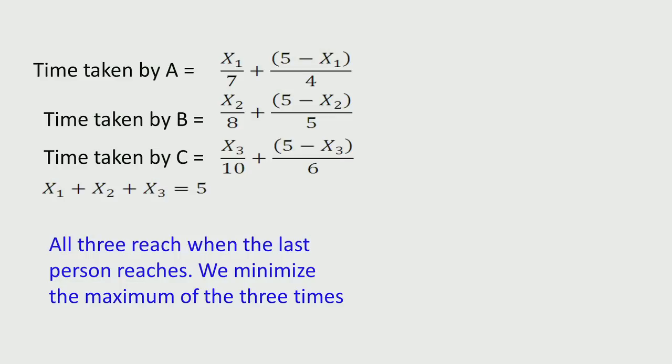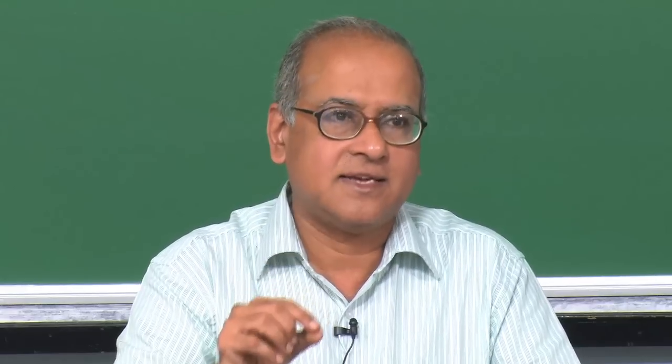We wish to minimize the time at which all three reach the destination. All three have reached when the last person arrives, so we minimize the maximum of the three times — the time taken by A, the time taken by B and the time taken by C. The maximum of the three times determines when all three have reached the destination. Let us call this maximum time u, which is a variable, so we minimize u.